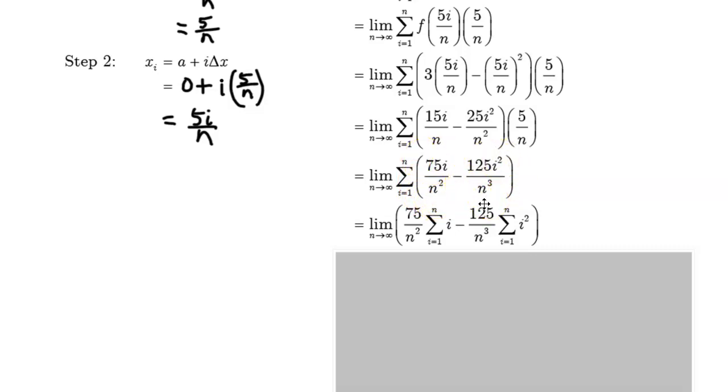And we actually did another step as well. We pulled out the 75 over n squared, and in this case, we pulled out the 125 over n cubed as a coefficient, thus leaving us with something critical to our process here, which is the sum of the first n integers and the sum of the first n squares.